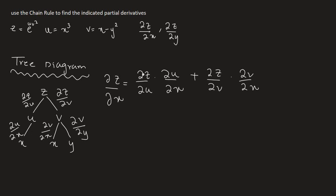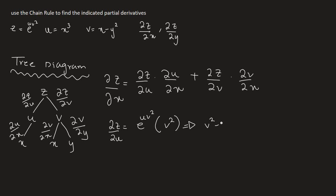The first step is to find the derivative of z with respect to u. We are differentiating the z function with respect to u, so we only differentiate u and v squared is constant. Just like the derivative of e to the x is e to the x, here the derivative of e to the u v squared gives e to the u v squared, but multiplied by the partial derivative of the inside function. The derivative of u with respect to u is 1, so we get v squared times e to the power of u v squared.